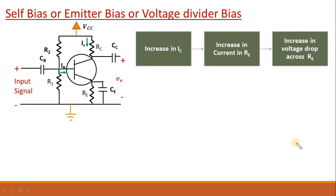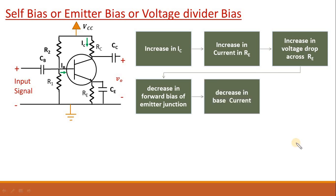As a result it will increase the voltage drop across RE. Once the voltage drop across RE will increase it will automatically decrease the forward bias of emitter junction. As a result base current will decrease. And we know that IC is proportional to IB. So if IB will decrease it will automatically decrease the IC.